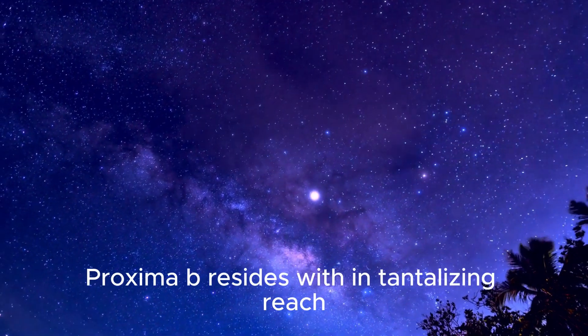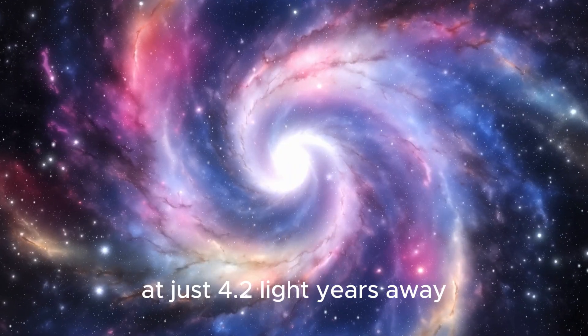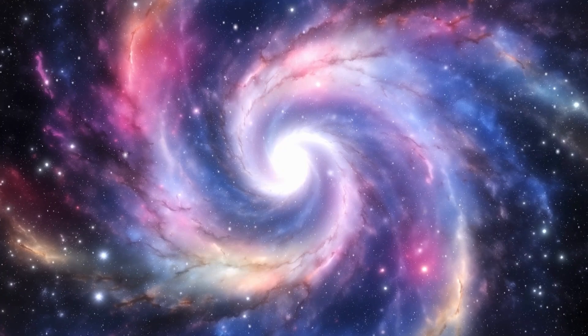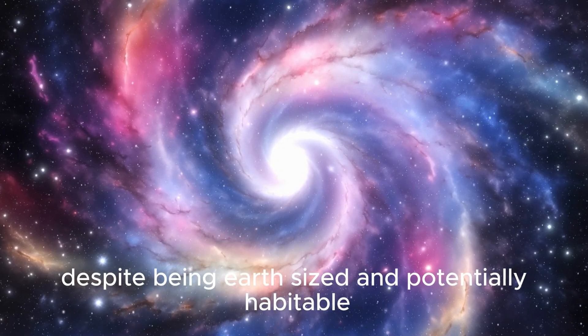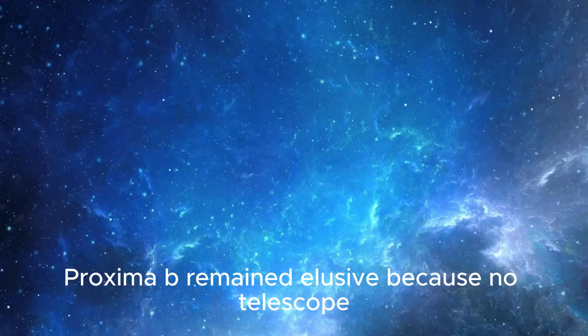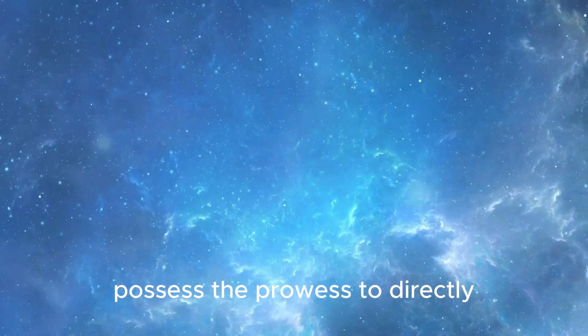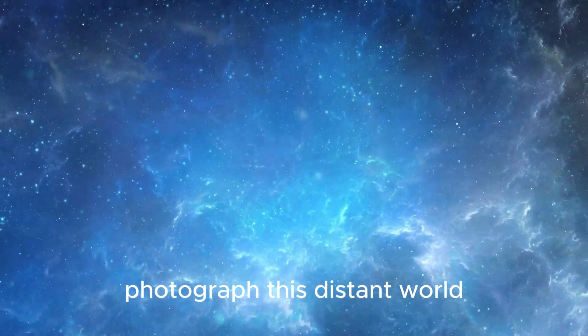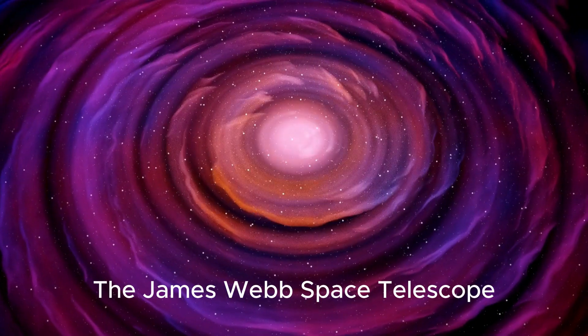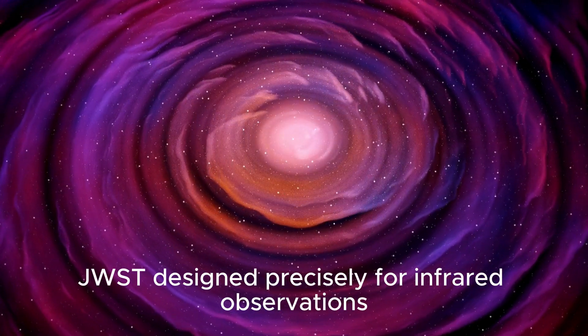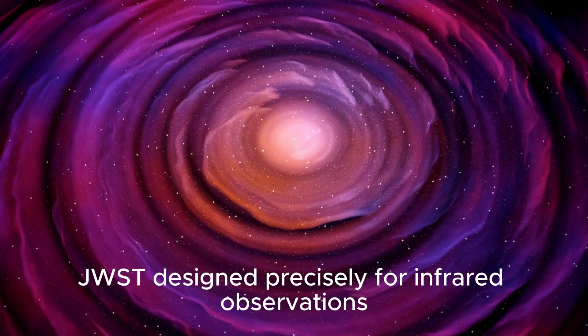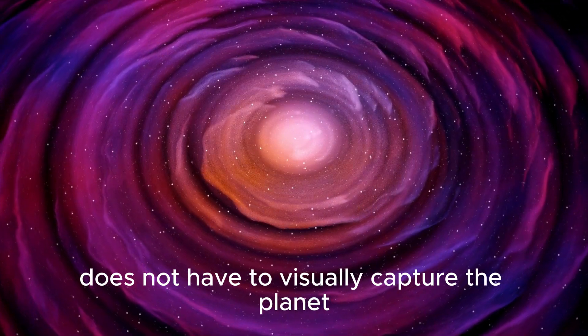Proxima b resides within tantalizing reach at just 4.2 light-years away. Despite being Earth-sized and potentially habitable, Proxima b remained elusive because no telescope, ground-based or in space, possessed the prowess to directly photograph this distant world. The James Webb Space Telescope, JWST, designed precisely for infrared observations, does not have to visually capture the planet.